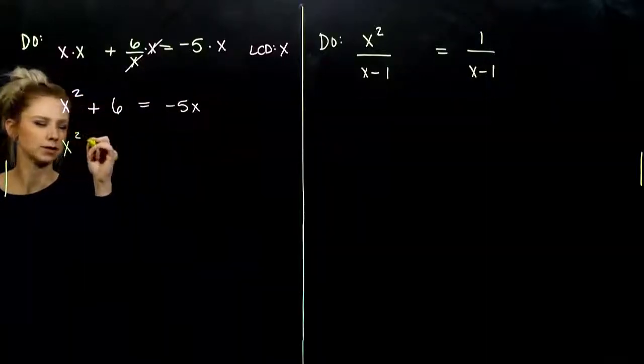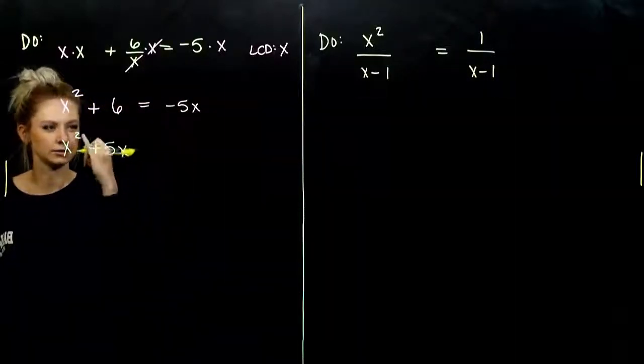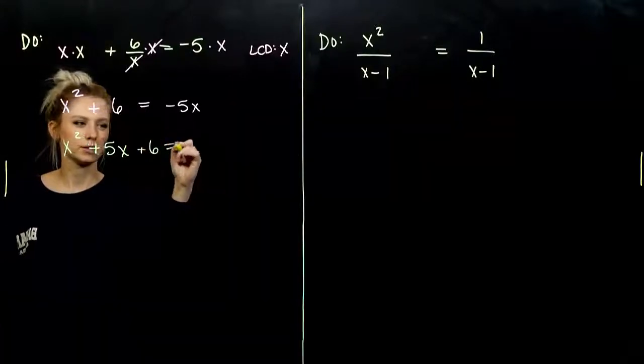So, that tells me I should move negative five x to the left, instead of moving these over to this side. So, x squared comes first. And now, it will be positive five x, positive six, equal to zero.